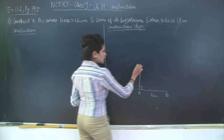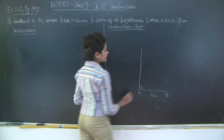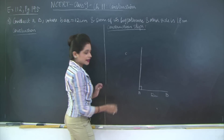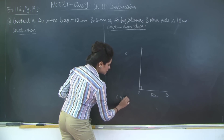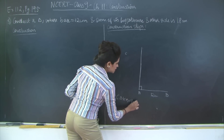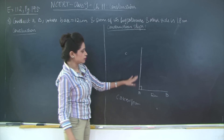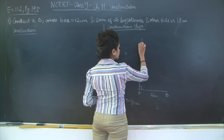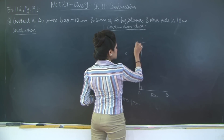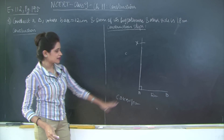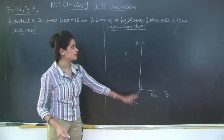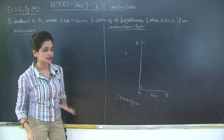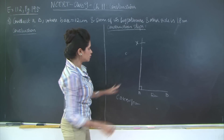So how do we do this? They are telling you that CA plus CB is equal to 18 centimeters. What I'm going to do is take a length equal to 18 centimeters and cut an arc. Let this point be X. This is similar to the first question, except that we have not been given the angle — we understand from the word hypotenuse that it is a right angle triangle.